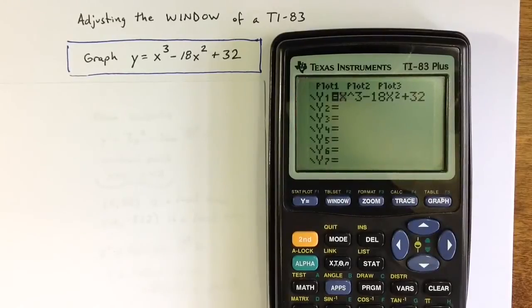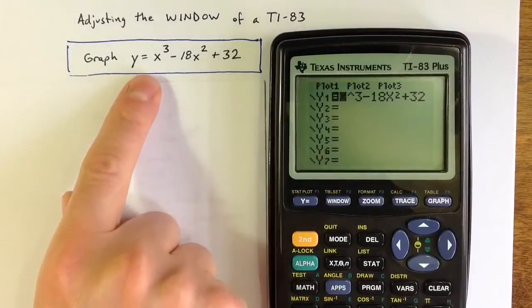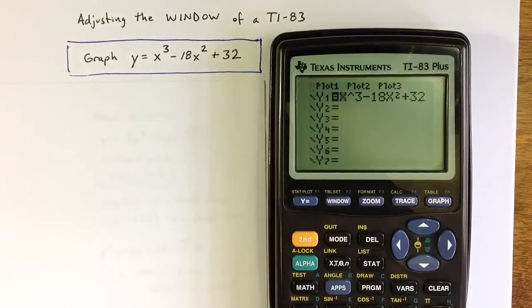Let's take a look at how we can create a nice graph of the function y equals x cubed minus 18x squared plus 32 on a TI-83 graphing calculator.